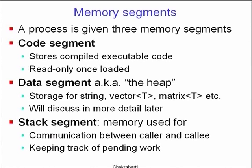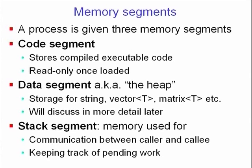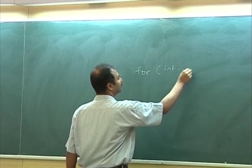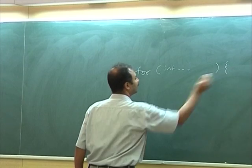The stack segment is what we're focusing on now. It's the memory used for: A, communication between the caller and callee; B, keeping track of pending work — so when the callee finishes, how to return back correctly to the caller — and being able to do this in a nested fashion in case you have nested function calls. There's another invisible bullet: every time you declare a scope, so suppose you had 'for int something', this int x has visibility only in that scope and disappears after.